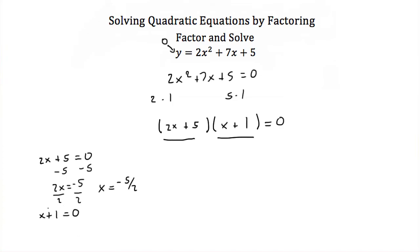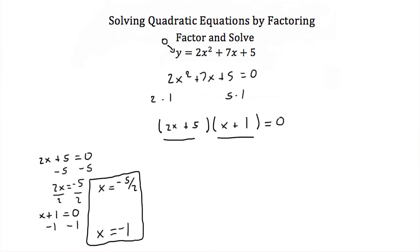For our second equation, I just subtract 1 from both sides and I get x is equal to negative 1. So these are the solutions, or the zeros, or sometimes they're called roots, of y is equal to 2x squared plus 7x plus 5. Now you can check these answers by just plugging in the x value into this equation. If y is equal to zero, then you were successful.